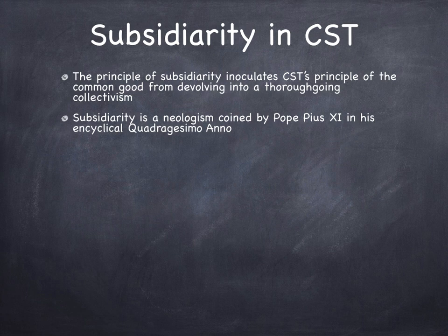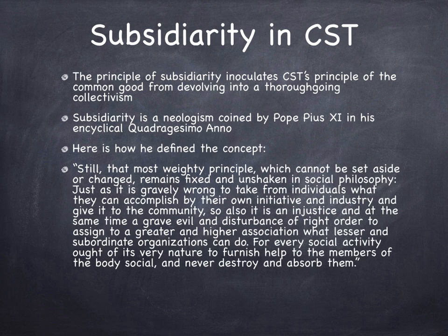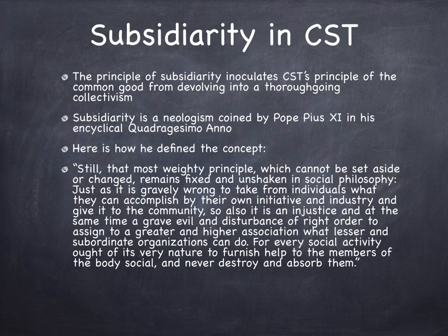Subsidiarity was a neologism coined by Pope Pius XI in his encyclical Quadragesimo Anno in 1931. Here is how he defined the concept: 'Just as it is greatly wrong to take from individuals what they can accomplish by their own initiative and industry and give it to the community, so also it is an injustice — a grave evil and disturbance of right order — to assign to a greater and higher association what lesser and subordinate organizations can do. For every social activity ought of its very nature to furnish help to the members of the body social and never destroy and absorb them.'